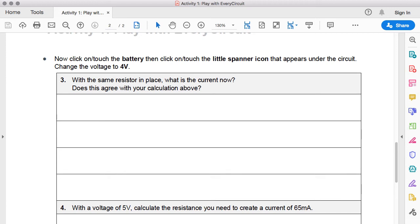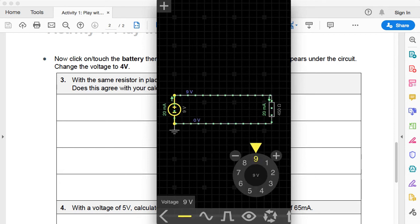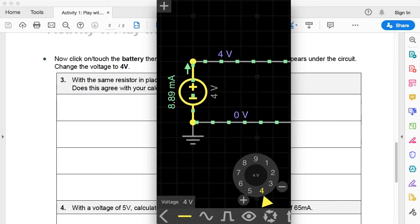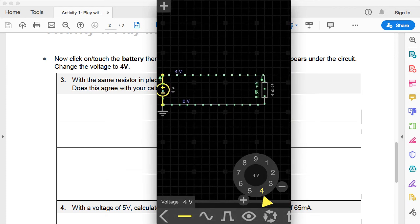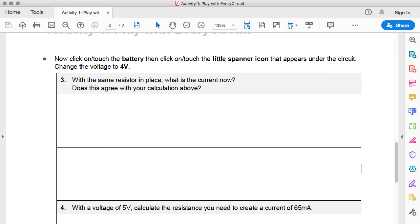Now it says click on or touch the battery, then click on or touch the little spanner icon that appears under the circuit to change the voltage to 4 volts. We're going to touch on the battery, you can see that it gets highlighted, and there's a little spanner icon at the bottom. By just touching on and dragging that yellow triangle, we can either increase or decrease the voltage of this cell. We want to decrease it all the way down to 4 volts. There it is at 4 volts, and we can see very clearly that the amperage is now 8.89 milliamps, which is exactly what we calculated. It does agree with our calculation.